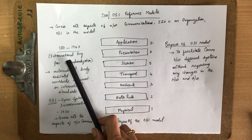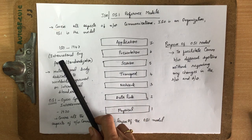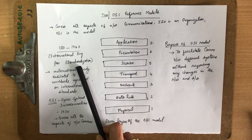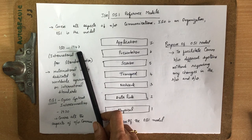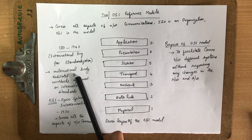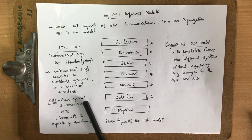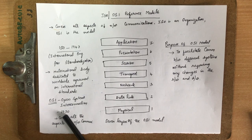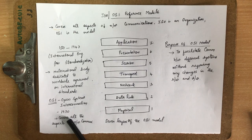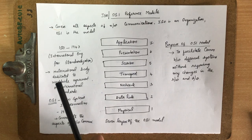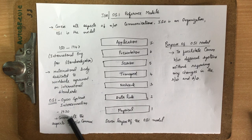ISO is a multinational body — it stands for International Organization for Standardization, developed in the year 1947. OSI is a model, which stands for Open System Interconnection, developed in 1970. This OSI model covers all the aspects of network communication. So ISO is an organization and OSI is a model which covers all network communication.